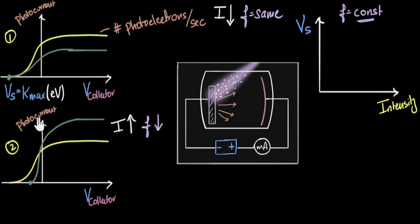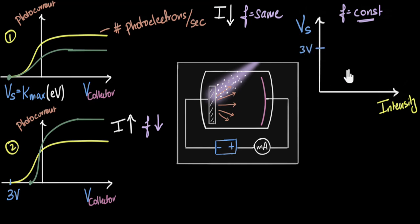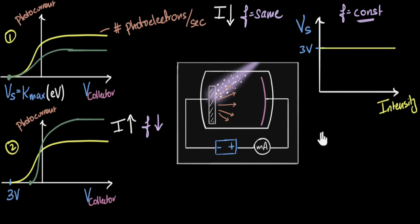Whatever was the stopping voltage earlier — let's say three volts — throughout the graph the stopping voltage will stay at three volts. That means our graph is going to look like a flat horizontal line. It's going to look like this.